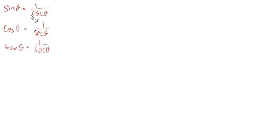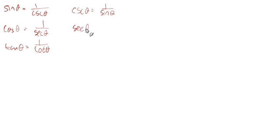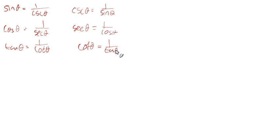Obviously the cosecant would be 1 over the sine, the secant would be 1 over the cosine, and the cotangent would be 1 over the tangent. So those are your reciprocal identities.